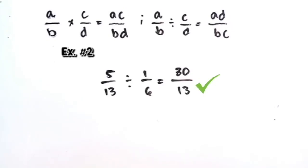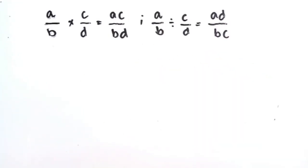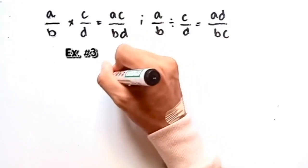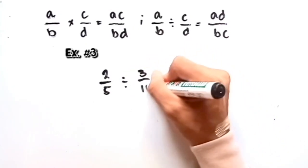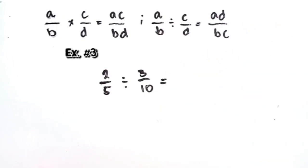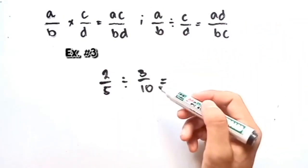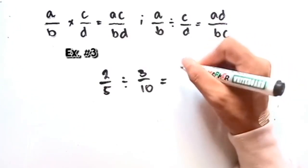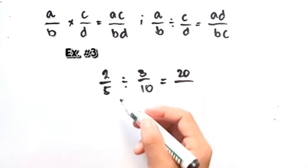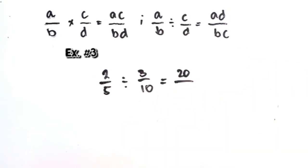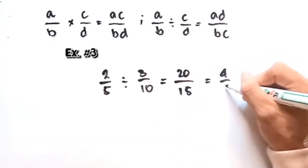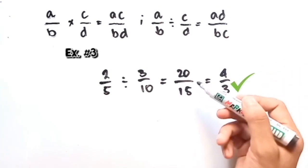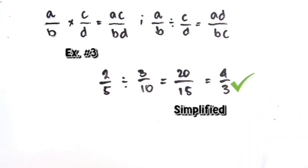Let's move on and proceed to the last example. If we're going to divide 2 over 5 divided by 3 over 10, this will be equal to AD over BC. So A is 2 and D is 10, so 2 times 10 is 20, over BC which is 5 and 3, so 5 times 3 is 15. Hence, this will be equal to 4 thirds — I just reduced 20 over 15 to lowest terms, which is 4 over 3.